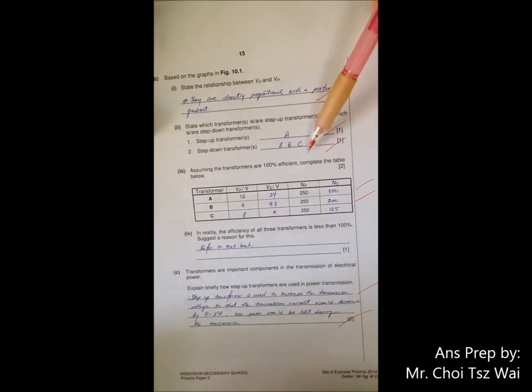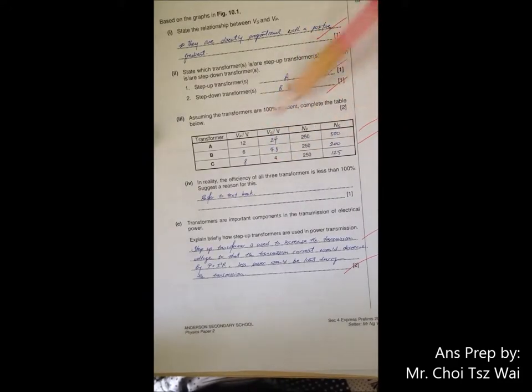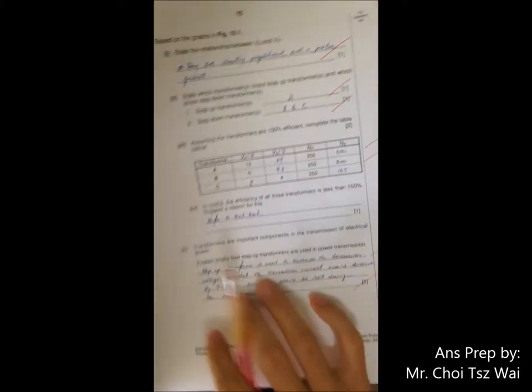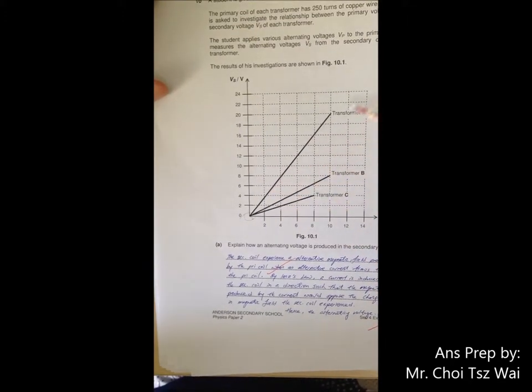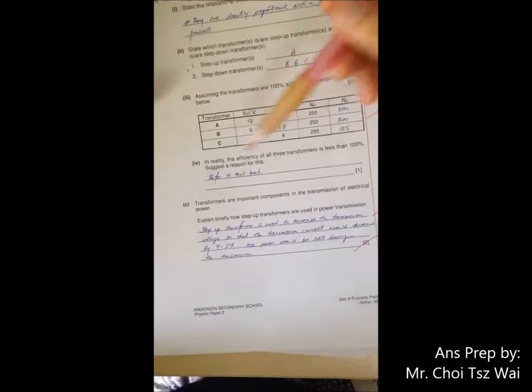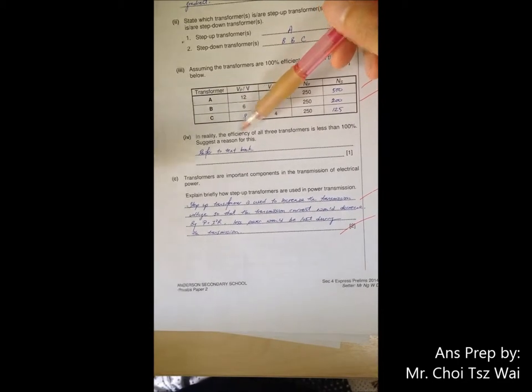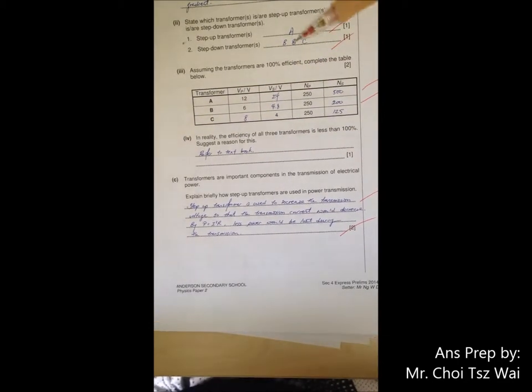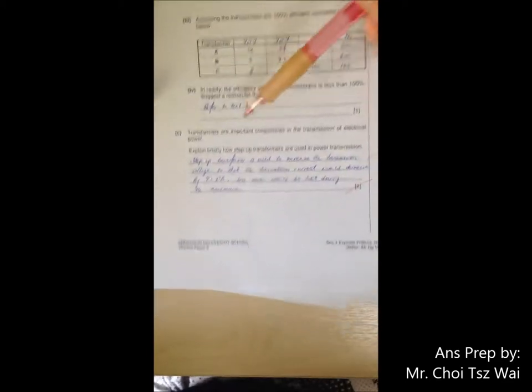Part two, I'm not going into it. Part three, I'm not going into it. How you get all these numbers? Go and look at your graph. Find the gradient. Or if not, extend the line and then predict it. Or just read directly. Why the efficiency is not 100% in the textbook. There are a lot of answers. Please refer to it.